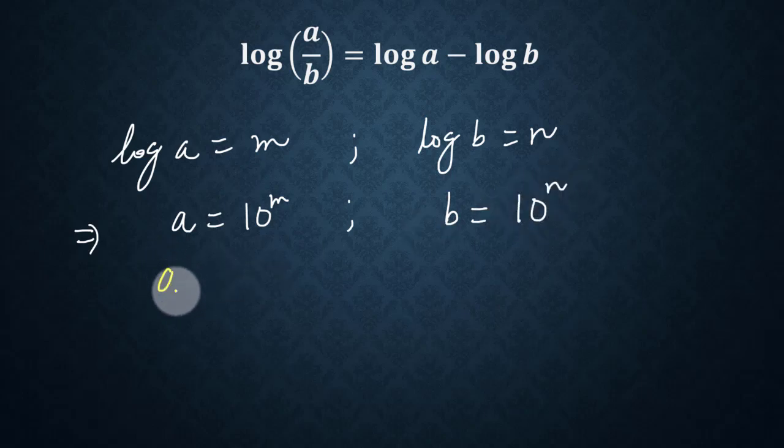Upon dividing a by b, we get 10 to the m divided by 10 to the n. And by using rule of exponent, this becomes 10 to the m minus n.